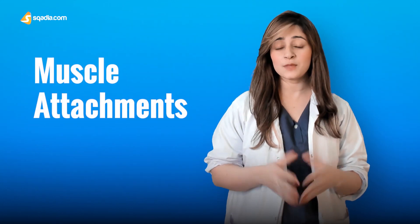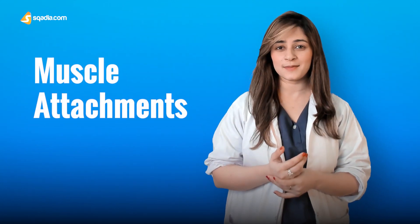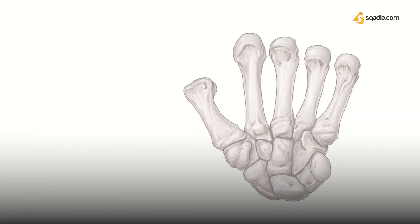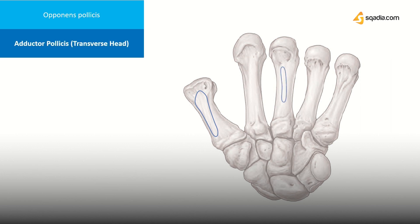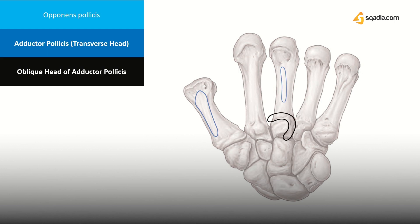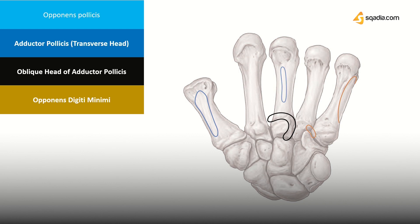Regarding muscle attachments: the opponens pollicis muscle inserts into the radial border of the thumb metacarpal. The adductor pollicis muscle has two heads — the transverse head arises from the ridge on the palmar surface of the shaft of the middle metacarpal, and the oblique head arises from the bases of the index and middle metacarpals. The opponens digiti minimi muscle inserts into the palmar surface of the fifth metacarpal along the ulnar border of the shaft.